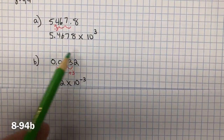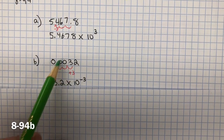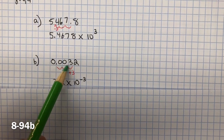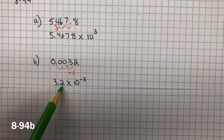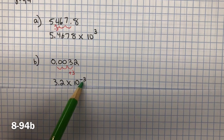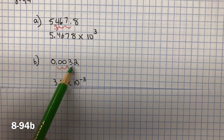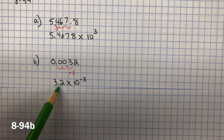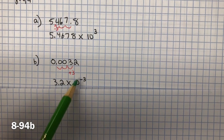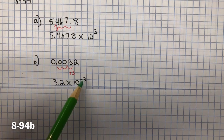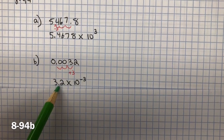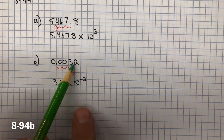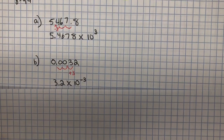In B, I have a very small number — much less than 1. So I increase the value by moving the decimal 1, 2, 3 places to the right. I have 3 and 2 tenths times 10 to the negative third. Since I increased the value here — going from a very small number to one greater than 1 but less than 10 — I have to multiply by a negative exponent to get that fraction. You can check: if I multiply 3.2 by 10 to the negative third, moving 1, 2, 3 places, I get back to the original.